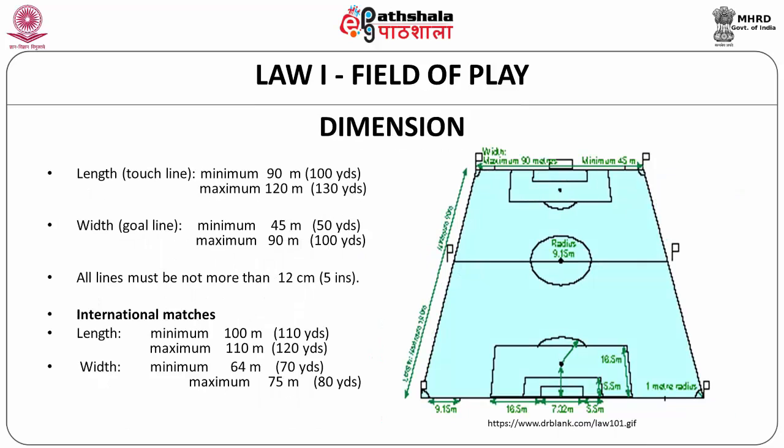Dimensions: there are two different dimensions for the football field — one is a general dimension and another is an international dimension for international matches. For general play, the length (touch line) has a minimum of 90 meters and a maximum of 120 meters, and the width (goal line) should have a minimum of 45 meters and a maximum of 90 meters. All lines must be not more than 12 centimeters.